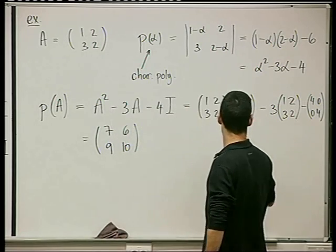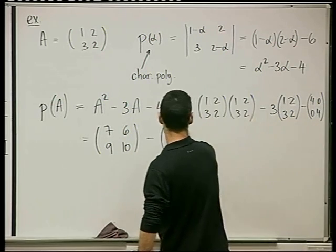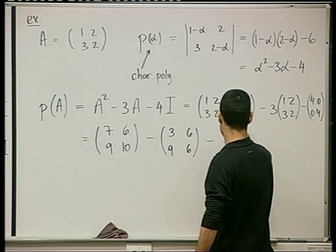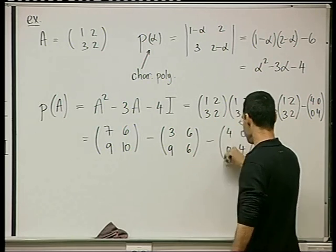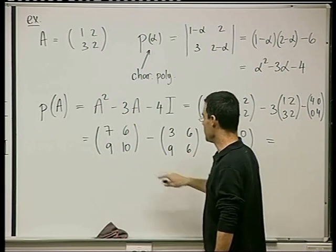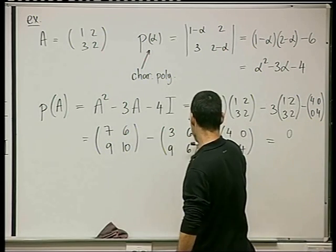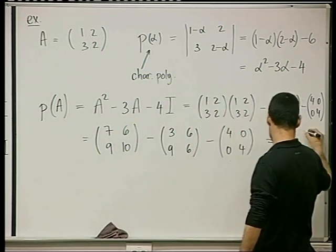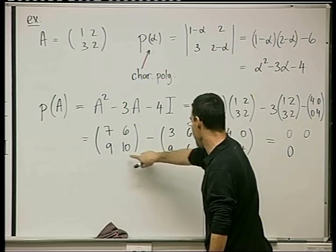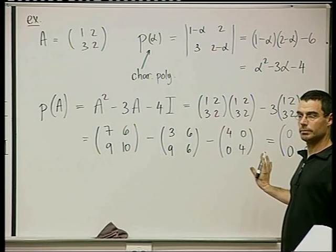Now let's subtract the matrices: A squared minus 3A minus 4I gives [[7-3-4, 6-6-0], [9-9-0, 10-6-4]] = [[0, 0], [0, 0]]. The zero matrix.